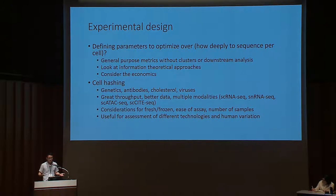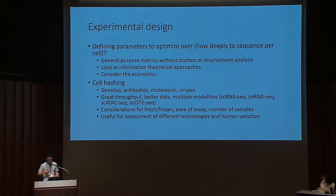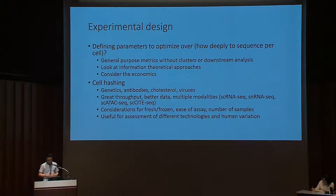We should also consider the economics — maybe what we want to optimize is not just how many reads to sequence per cell but how many reads given how much resources we have. One of the most promising ways to optimize experimental design is cell hashing, or multiplexing many samples together for single cell profiling. There are lots of different ways to do this: genetics, antibodies labeled with oligonucleotides, cholesterol labeled with oligonucleotides, or viruses if you can infect the cells.